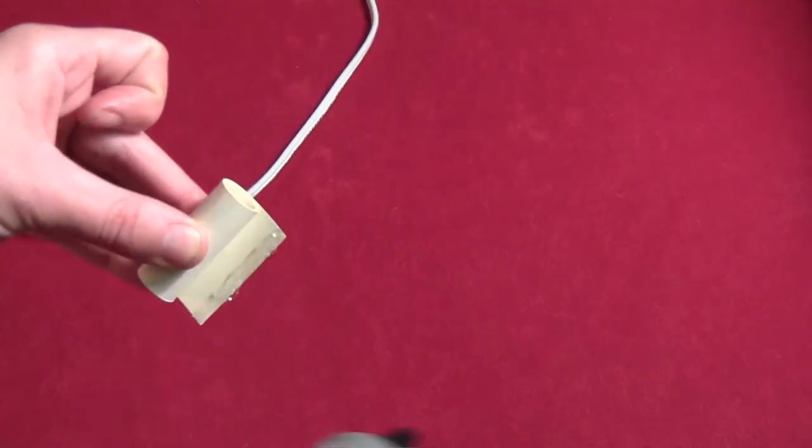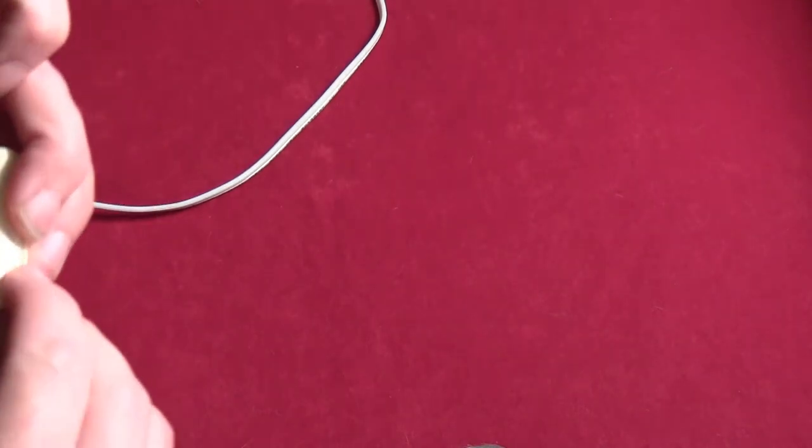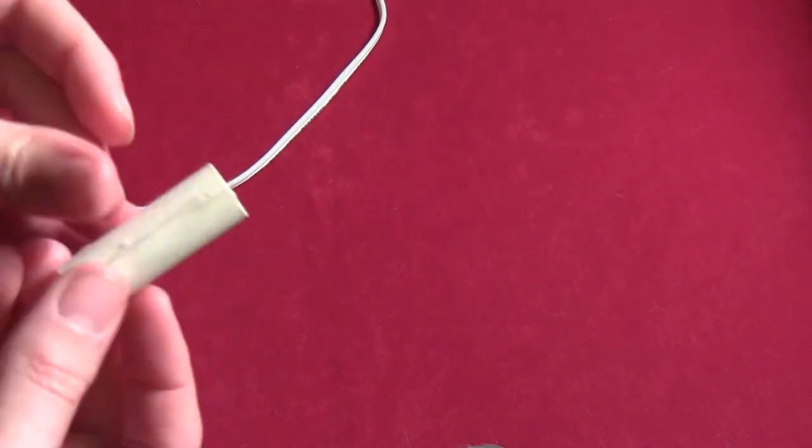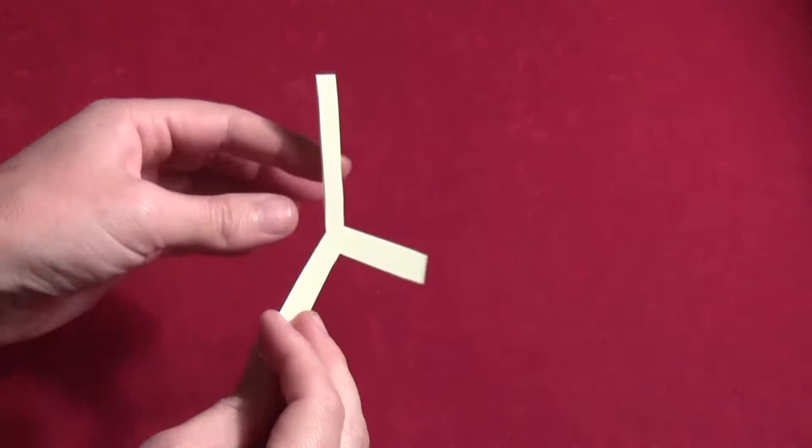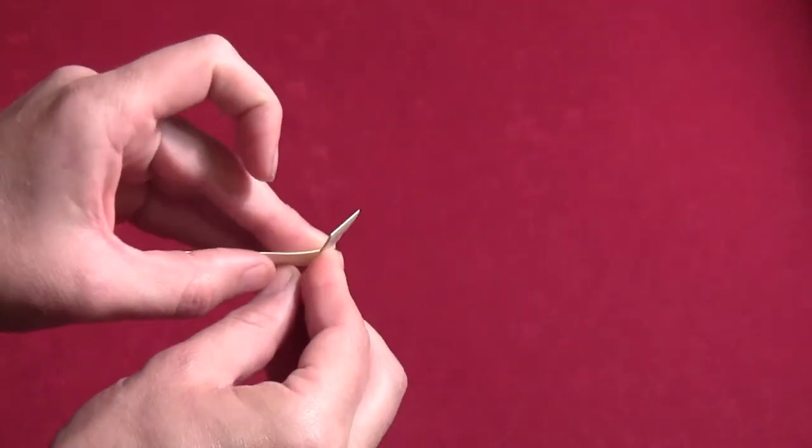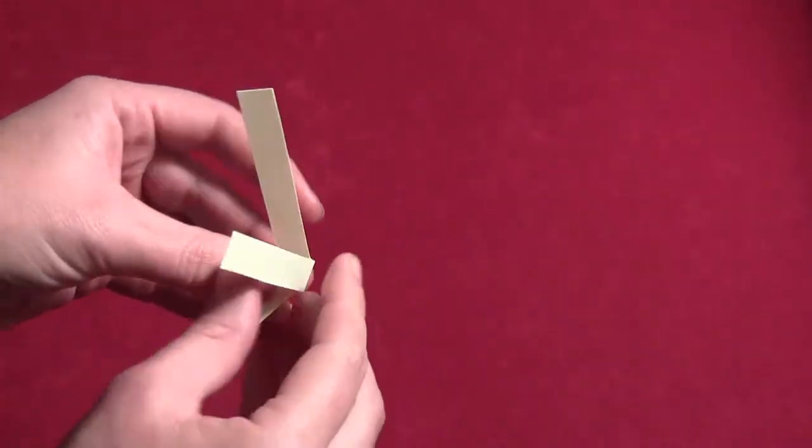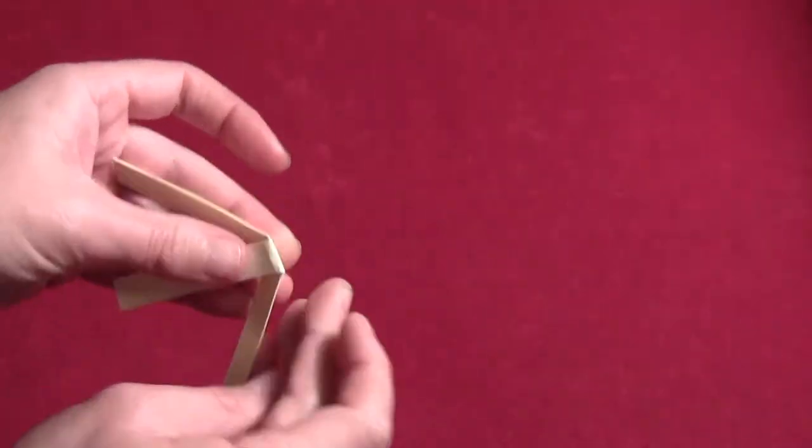And then just hot glue the edge of it in place so it stays rolled up. Then cut yourself a little three-prong piece of cardboard. And you just want to bend up each one of the legs right where they meet the other two.